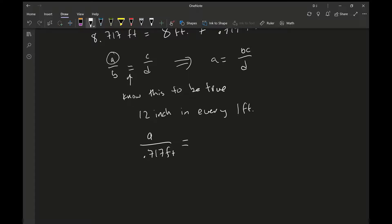So that would be the same as there's 12 inches for every one foot. So that means a, this ratio, should be the same ratio as a 12 to 1 ratio. So that means a should equal 12 times 0.717. So let me bust out the calculator here.